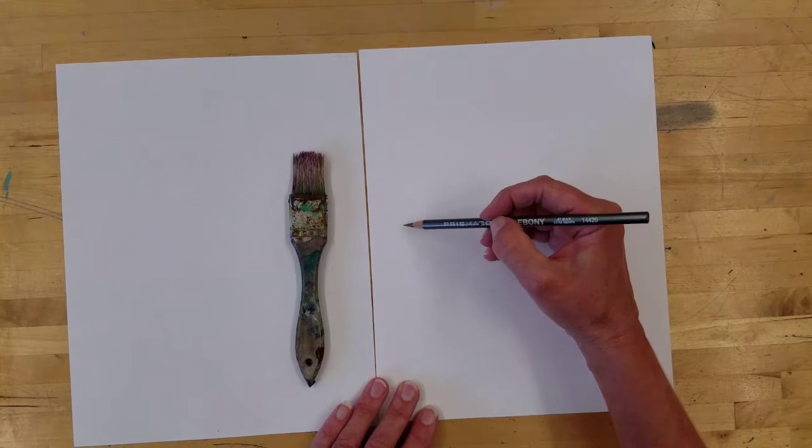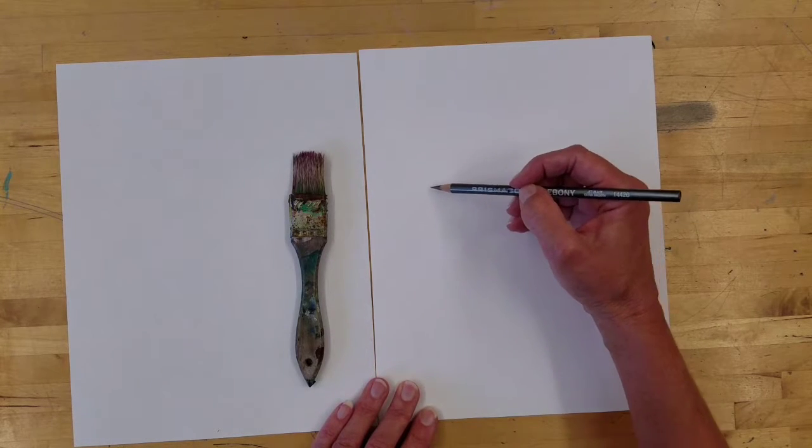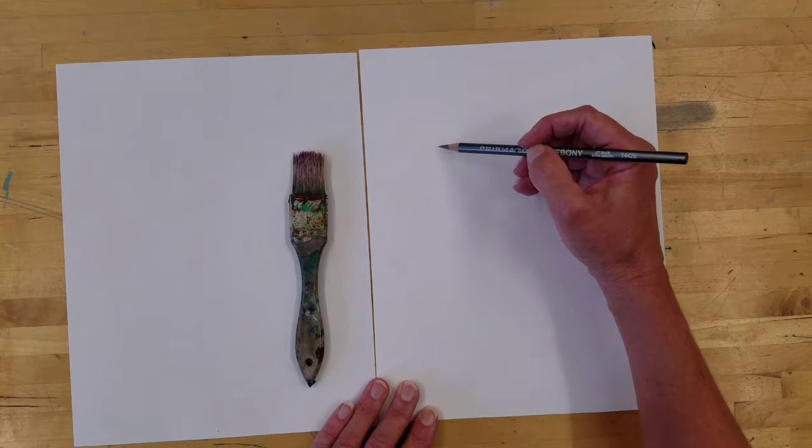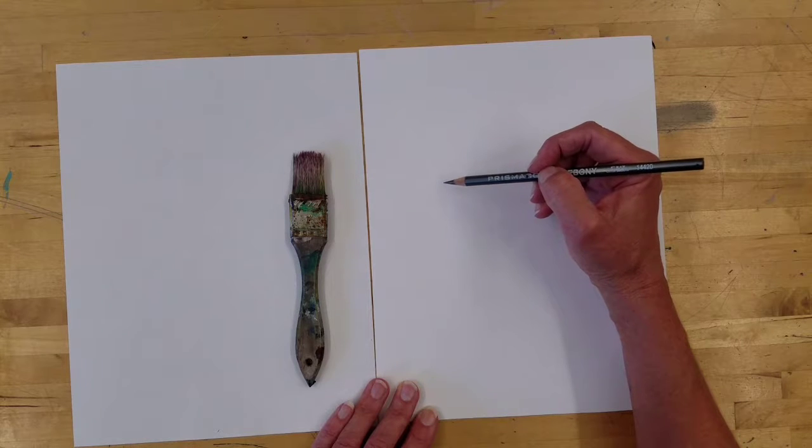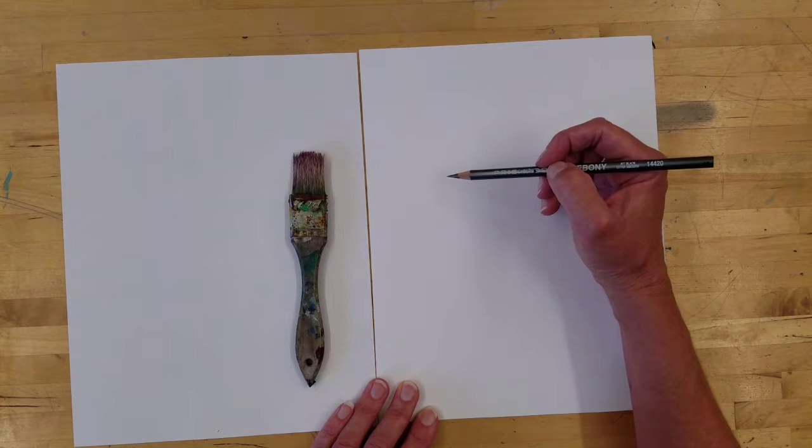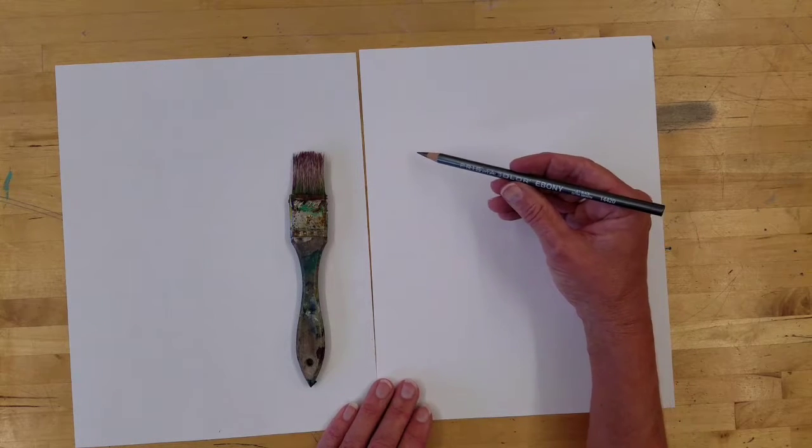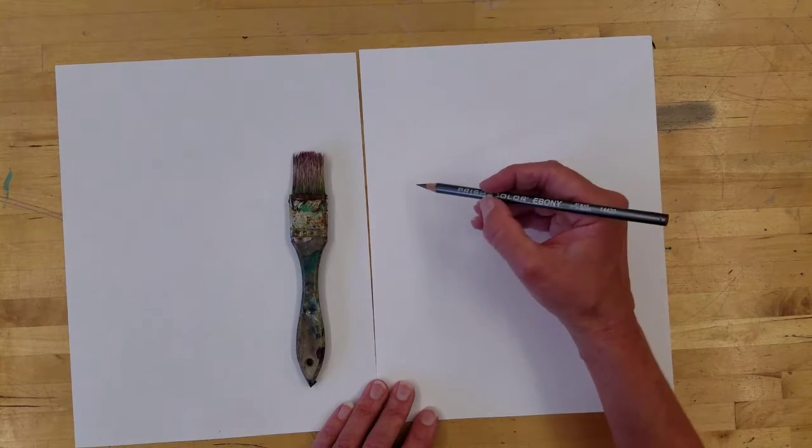So now I have a pretty good idea of where it's going to go. I'm going to go ahead and do my contour line drawing. Keep in mind I'm going to go kind of quick because it's a demo and because I've done this a hundred million times. But I'm also switching over and using a darker pencil so that it shows better on the screen.